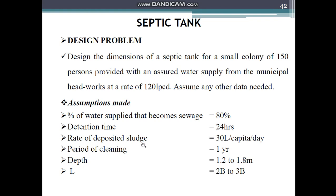The rate of deposited sludge will be taken as 30 liters per capita per year — that is, the amount of sludge generated per capita per year. The period of cleaning could be taken between six months to three years, so we'll assume it as one year. Depth can be taken between 1.2 to 1.8 meters, and length can be twice or thrice of breadth.